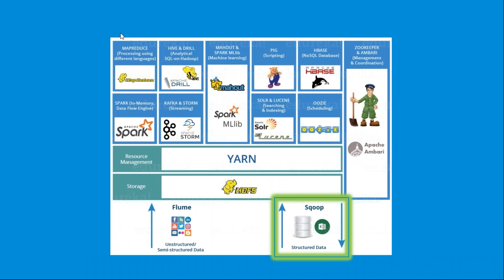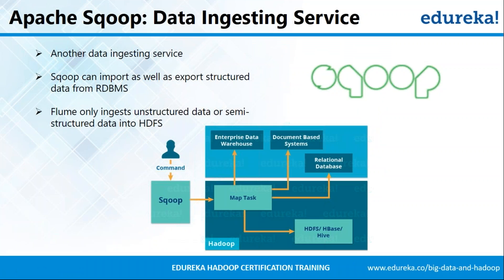Sqoop is also used for data ingestion, but it works between a relational database and HDFS. Using Sqoop you can move data from your relational database into HDFS and vice versa — you can also move data out of HDFS into an RDBMS. It mostly deals with structured data. Comparing Flume with Sqoop: Flume is mostly used for moving data into HDFS and deals with streaming data, whereas Sqoop works with structured data and can move data both in and out of HDFS.